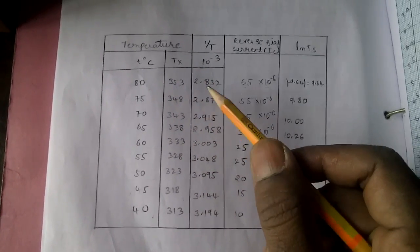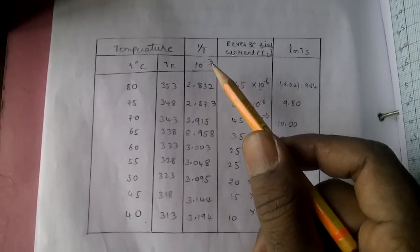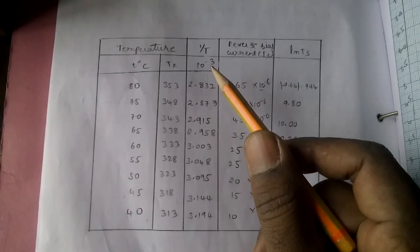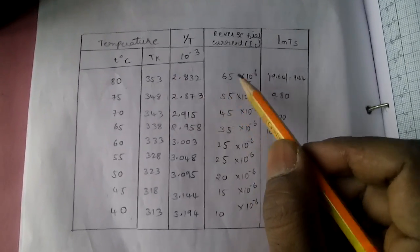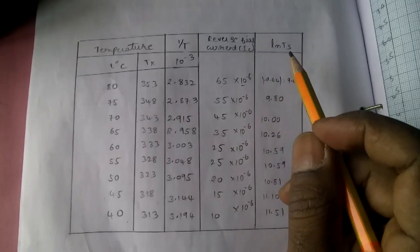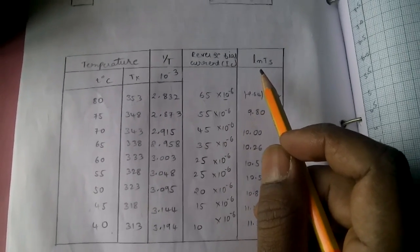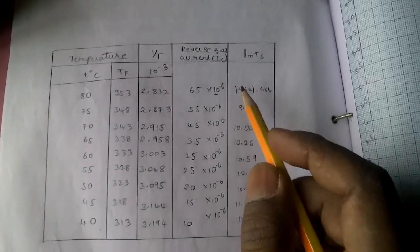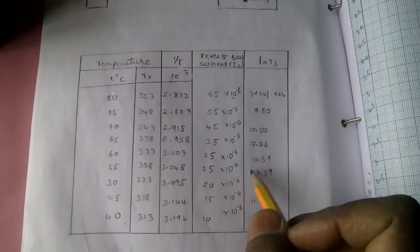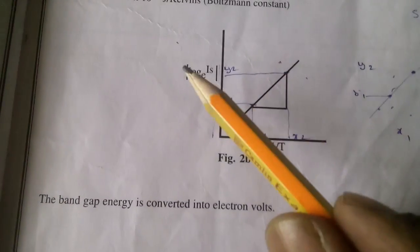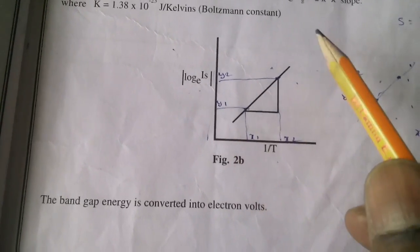Calculate 1/T in Kelvin — you get values like 2.8 × 10^-3. The 10^-3 is written on the upper side of the axis. Now take the natural log (ln) of the current values using the ln function on your calculator — do not use log base 10, use ln. Using these values, plot the graph of 1/T versus ln(I). From the points, you will draw the line.